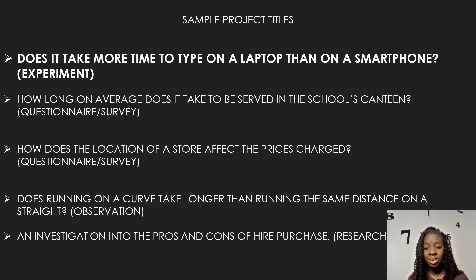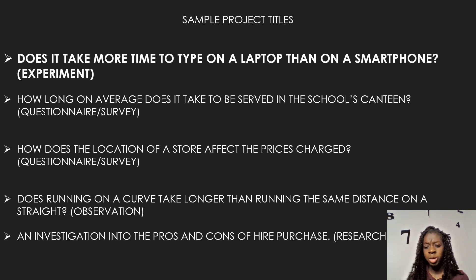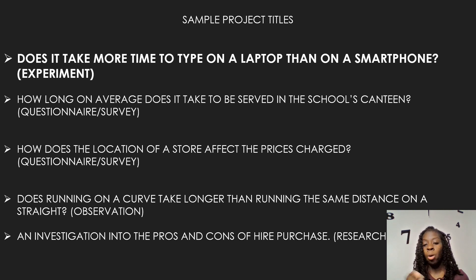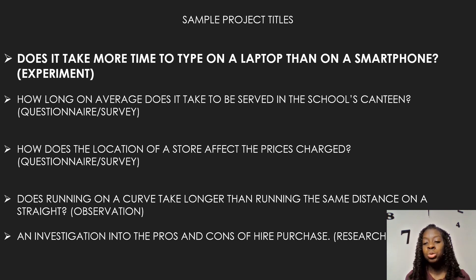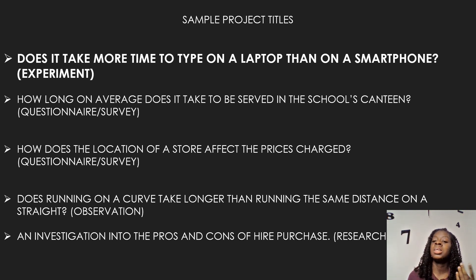'How does the location of a store affect the prices charged?' — again, you can use a questionnaire or a survey. 'Does running on a curve take longer than running the same distance on a street?' — you can do observation or an experiment. 'An investigation into the pros and cons of hire purchase' — you'd probably go to Courts, get the brochures, and compare prices. These are sample titles that have been exhausted — CXC has seen them repeatedly, so think outside the box and think creatively.